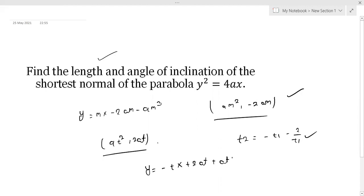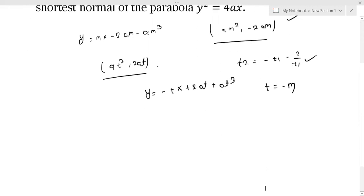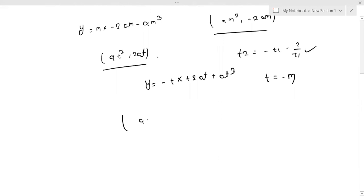Here you can see that T is equal to minus MO. So if I write it in the second coordinate, AT2 square, 2AT2, then I will say here...